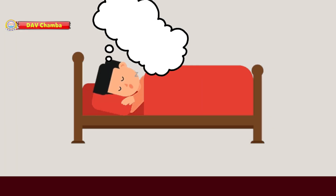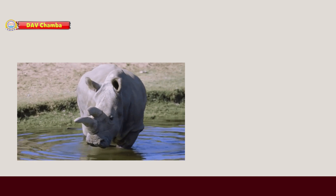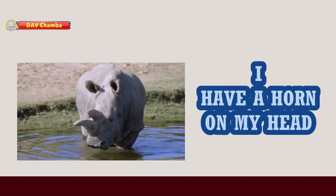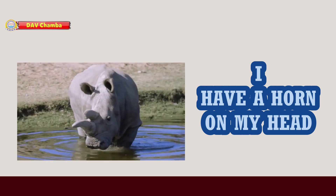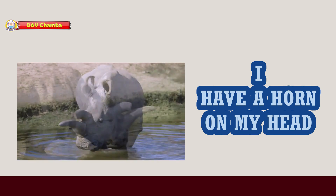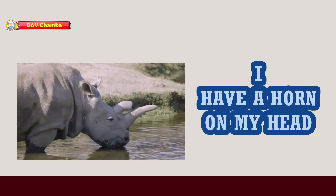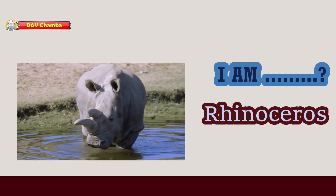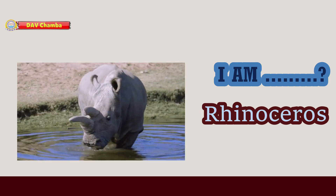Let's see how the next animal introduced himself. He said, 'I have a horn on my head. Who am I?' Students, it is your turn to guess the name of this animal. I am a rhinoceros. Yes students, you are right — it is rhinoceros.